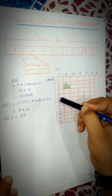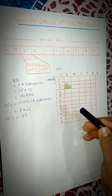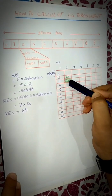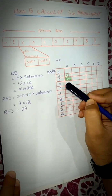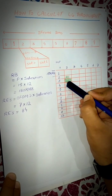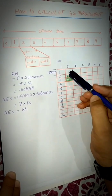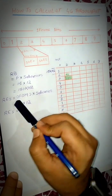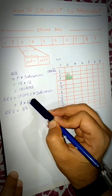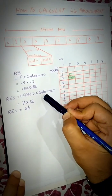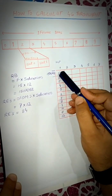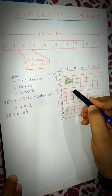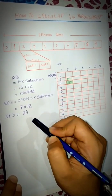Now let's discuss REs — each small box is called a Resource Element (RE). The green highlighted box is one RE. To calculate REs in one RB, use: REs = OFDM symbols × subcarriers. With seven OFDM symbols and 12 subcarriers, the total number of REs in one RB equals 84 REs.